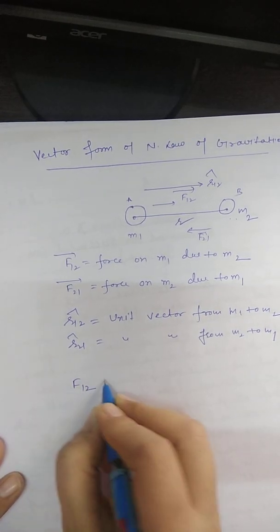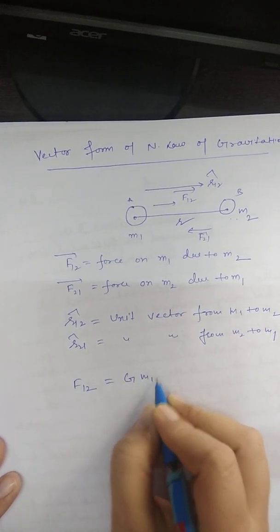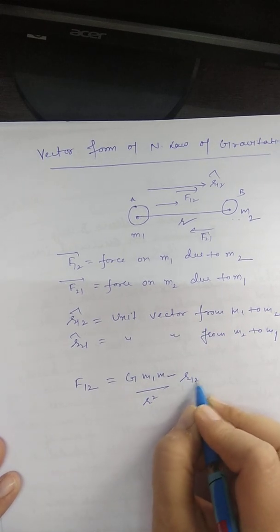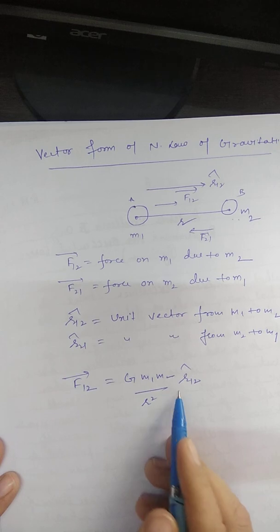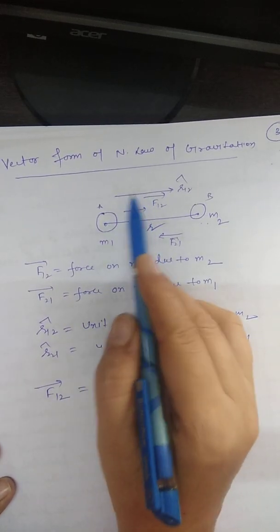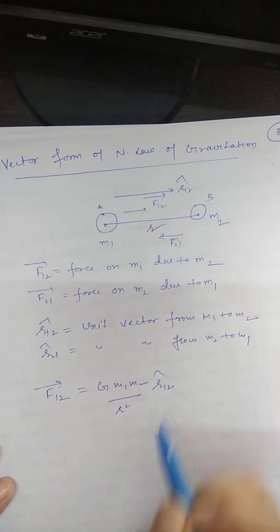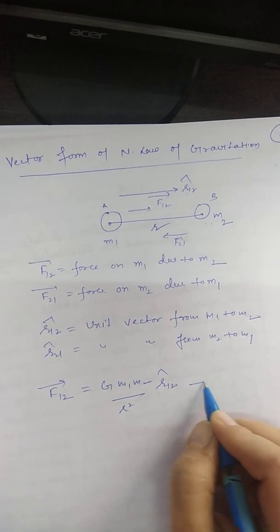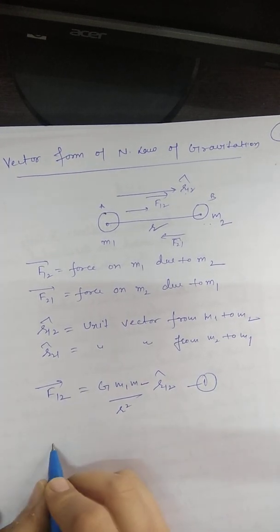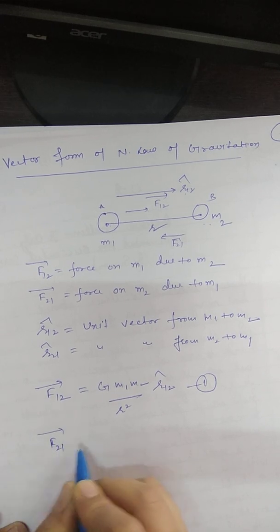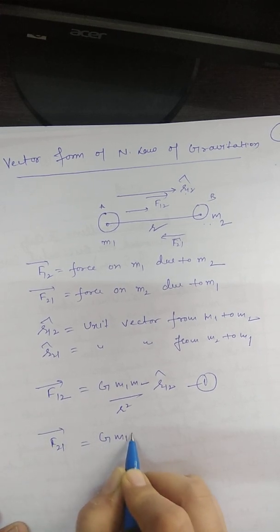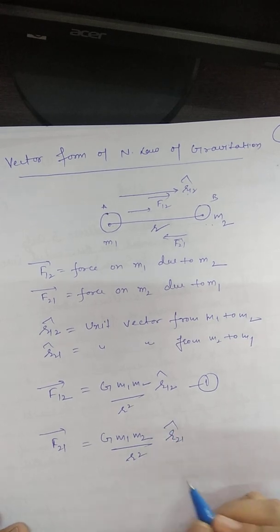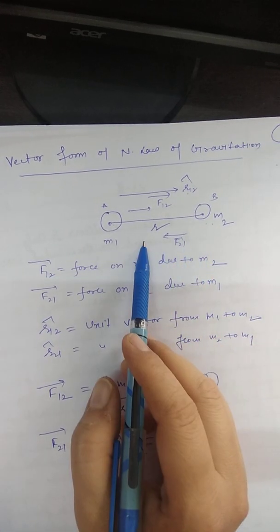You can write F12 as GM1 into M2 divided by R square, times r12 cap. F12 has the same direction as that of r12 cap. Similarly, F21 is GM1 into M2 divided by R square times r21 cap, because F21's direction is towards r21 cap.